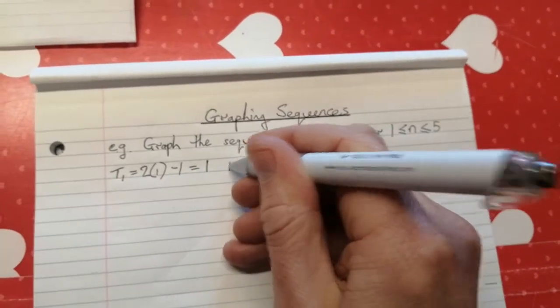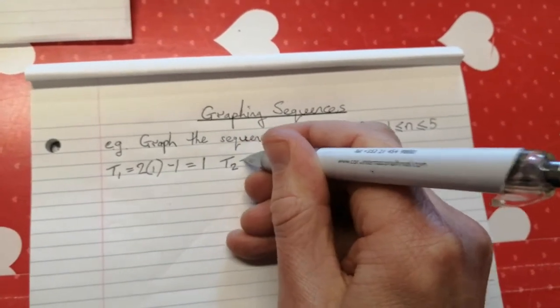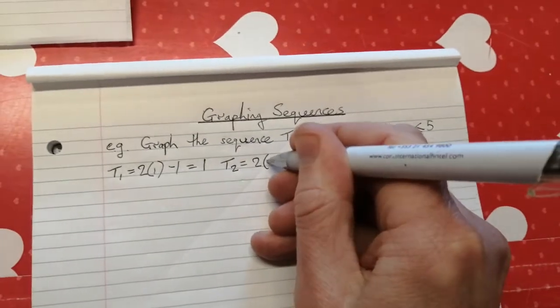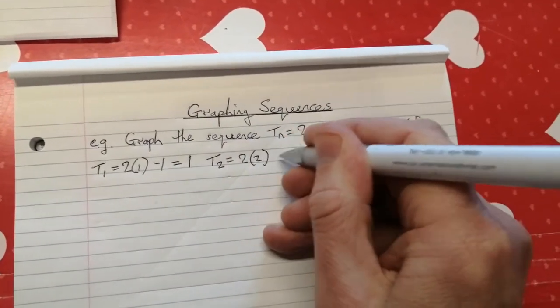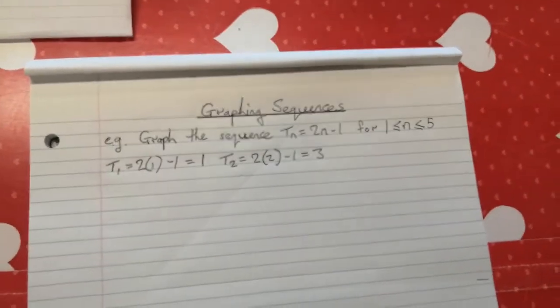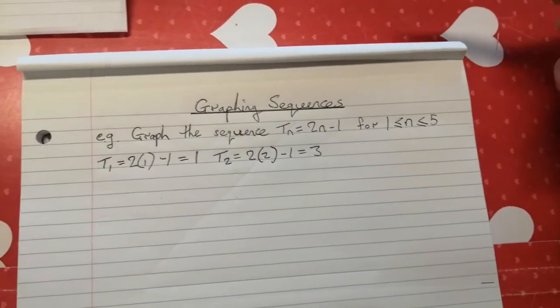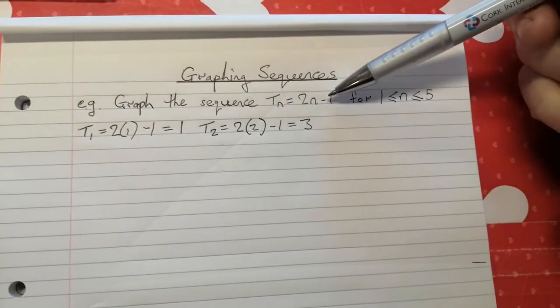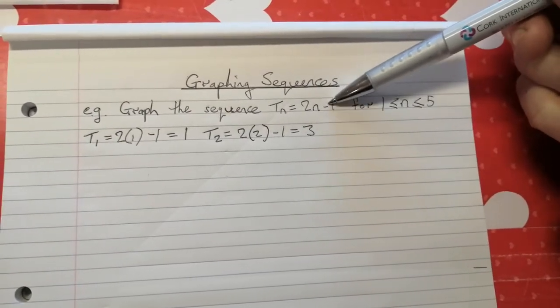We can do the same thing for the second term. Term 2 is equal to 2 times 2 minus 1. Well, 2 twos are 4, take 1 is 3. Now, if we've been listening to what's been going on so far, we know that this is a linear sequence.